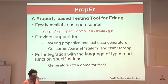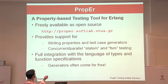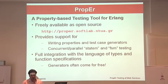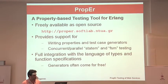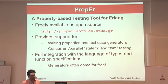In the last one and a half years, we have been building a property-based testing tool for Erlang called ProPer. It's freely available as open source at property.softlab.ntua.gr. It provides support for writing properties and test case generators, with components for concurrent and parallel testing based on state machines. The salient feature is full integration with Erlang's type and function specification language, so generators often come for free — you don't have to write them if you have annotated your program with types.